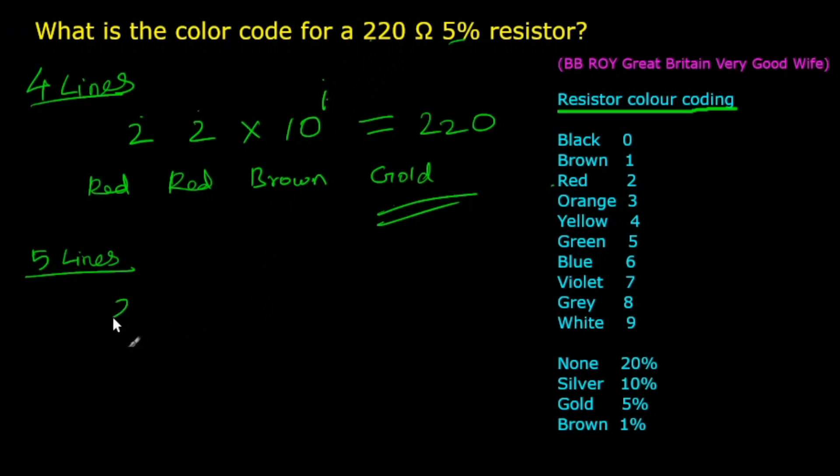First, write significant digits, that is 2, 2, 0. The 4th digit is the multiplier, so we need to find the value in 10 to the power which gives the given resistor value, that is 220. So the multiplier band value is 0. As we know, 10 to the power 0 is 1.